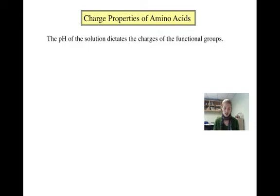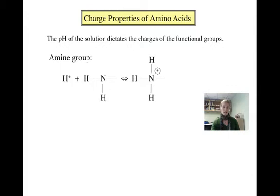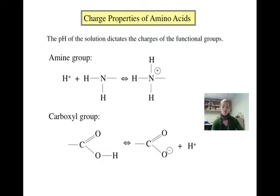An amino acid has different charge properties based on the pH of the solution it is in. pH dictates whether the amine and carboxyl groups in an amino acid will be protonated or deprotonated. The amine group gets protonated and deprotonated: if the group has only two hydrogens, it is in its deprotonated form and has no charge, whereas if it has three hydrogens, it is in its protonated form and has a charge of plus one. The carboxyl group is also protonated and deprotonated: in its protonated form with the hydrogen on, it has a neutral charge, whereas in its deprotonated form with the hydrogen off, it has a charge of minus one.